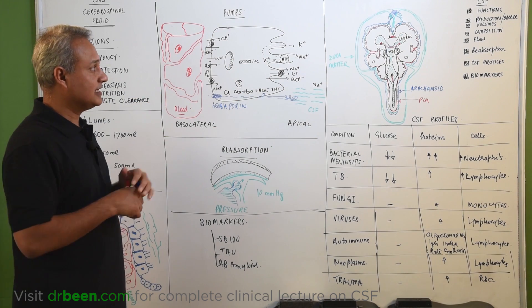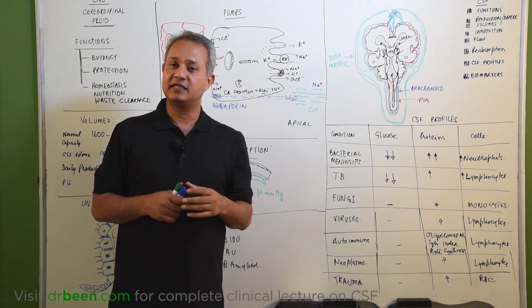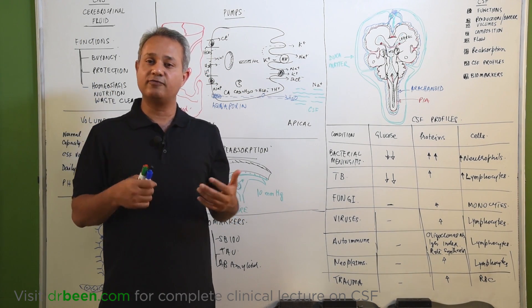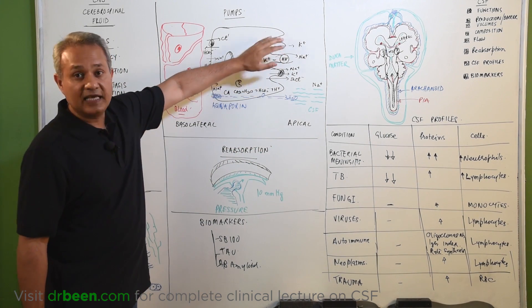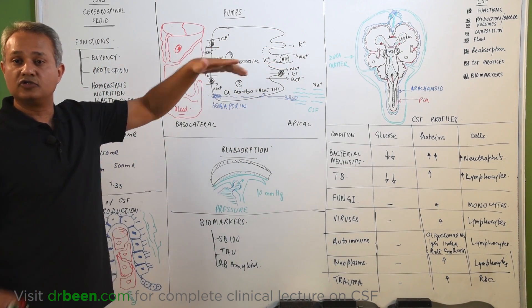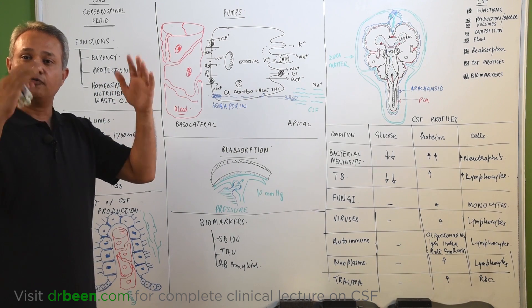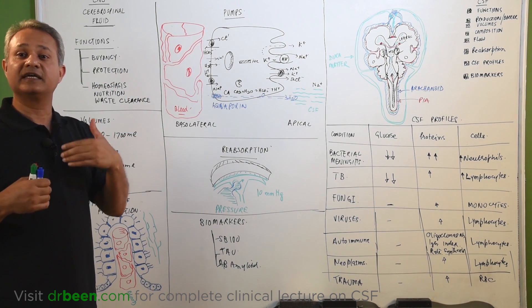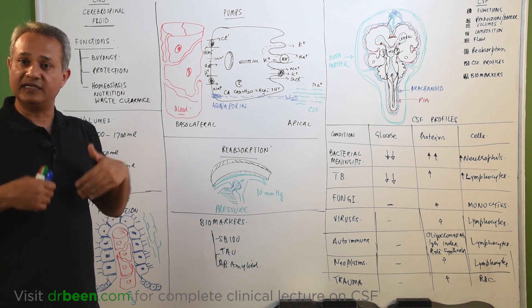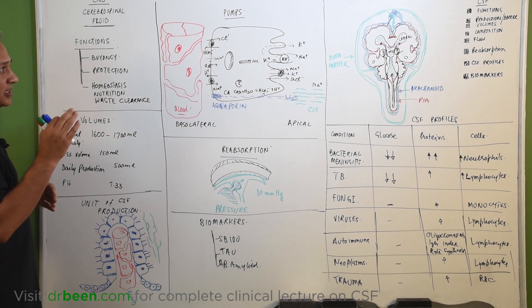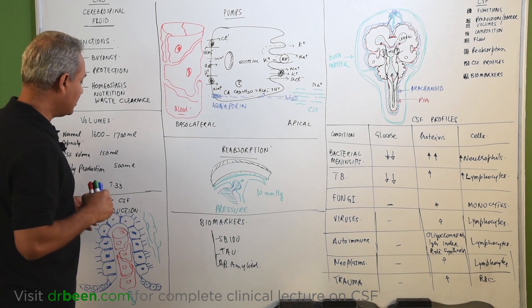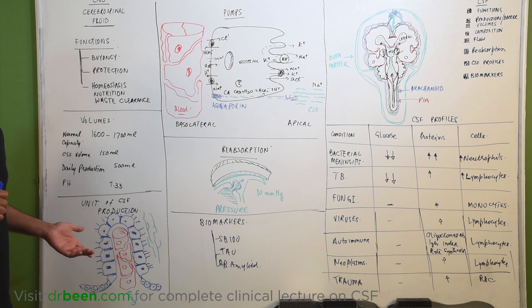So, that is the flow of the CSF. The question, why does the CSF flow? Why would the CSF move? You would see that the ependymal cells, they have gotten cilia on them. Beating of the cilia would move the CSF, just like the tracheal cells have the cilia and they move the secretions up. So, we have gotten the flow of the CSF.